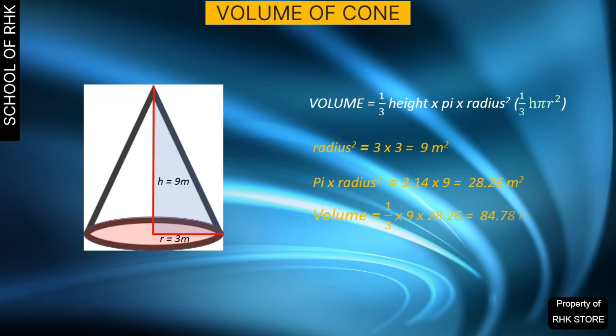meters times 28.26 square meters gives us 84.78 cubic meters, which is the volume of the cone.